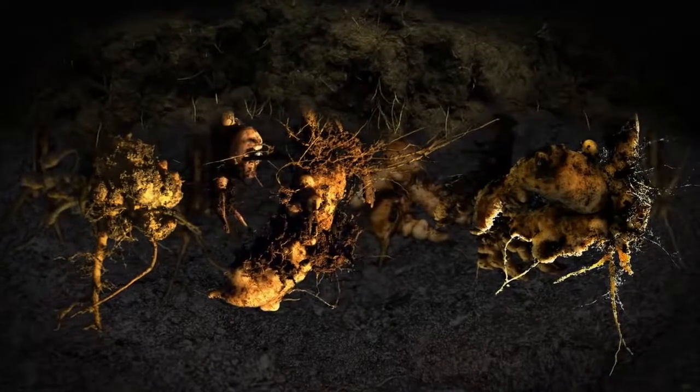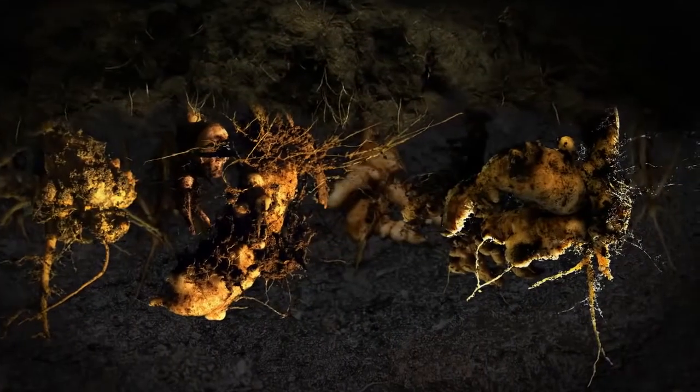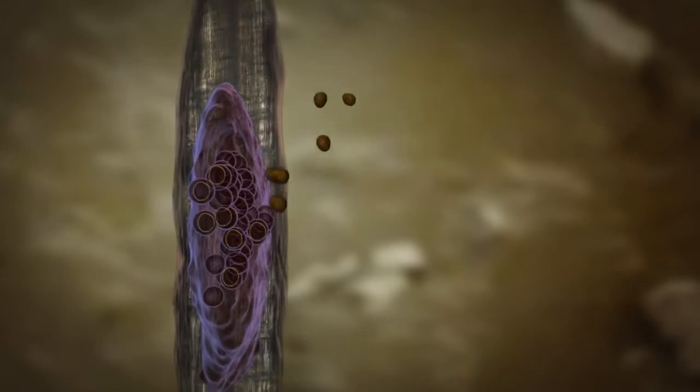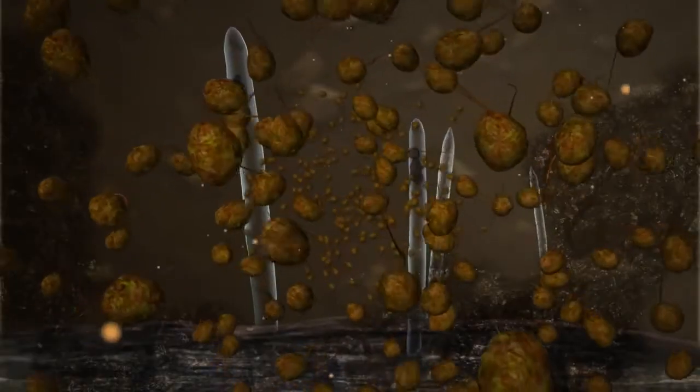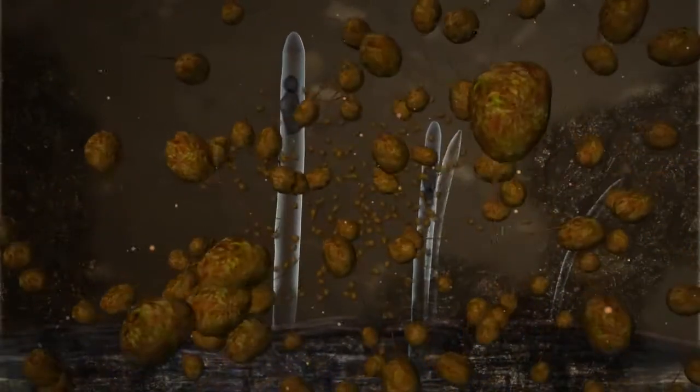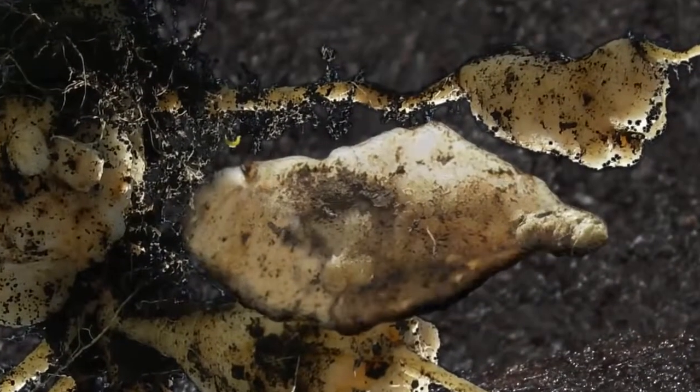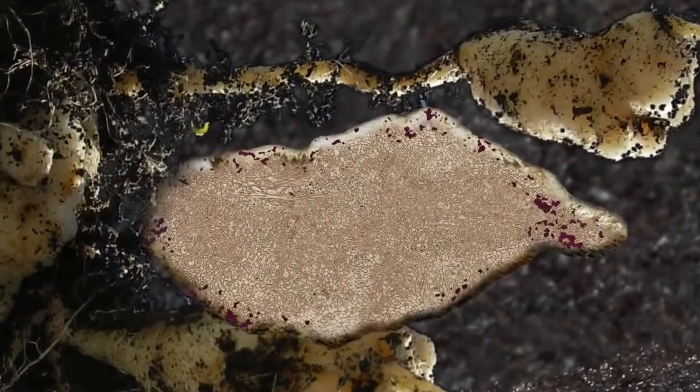Secondary zoospores initiate the root symptoms that cause yield loss in infected plants. Large numbers of these zoospores can be produced in the root hairs. They infect the entire root surface, not just the root hairs. After infection, these zoospores differentiate into plasmodia that grow and reproduce rapidly, and spread deep into the root tissue.